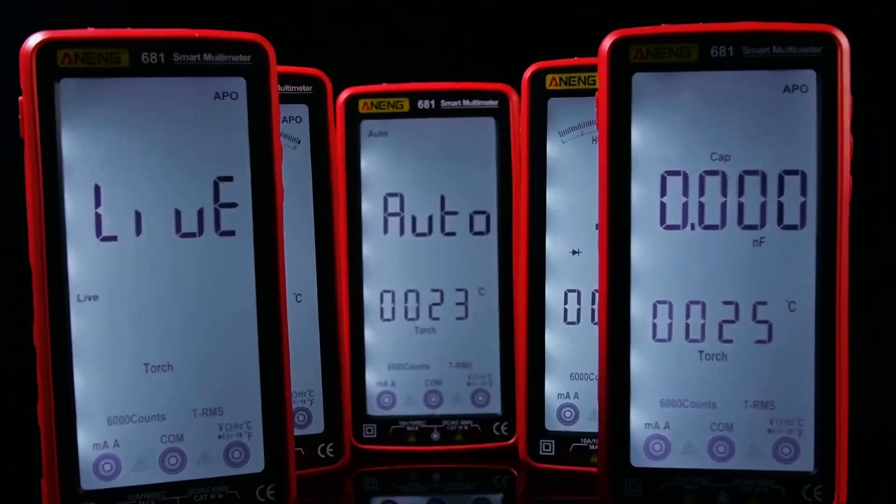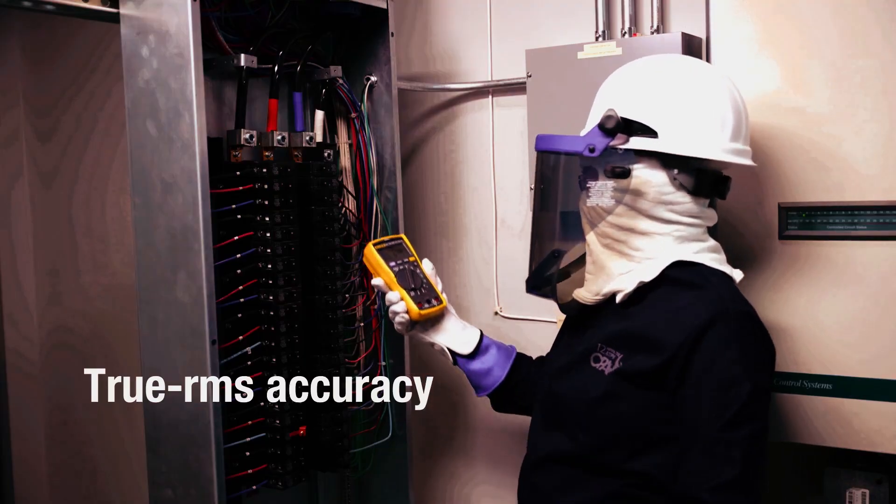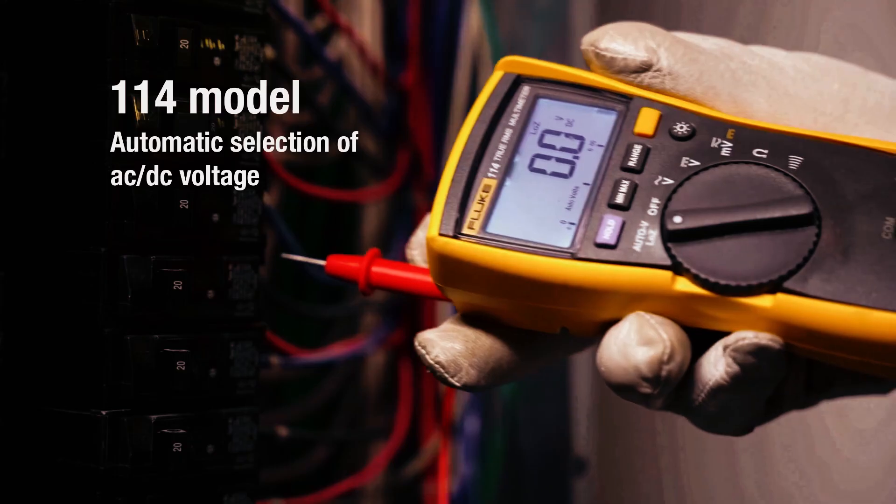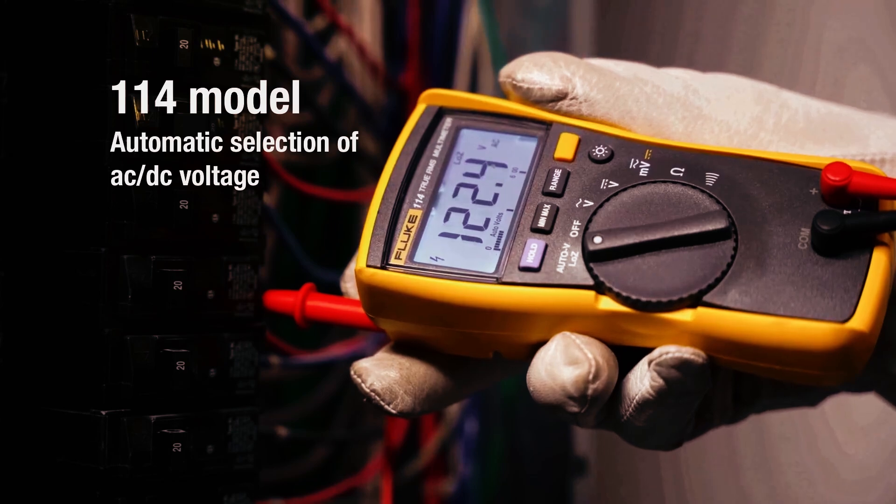If you can, always turn off the power before you connect the multimeter. But if you're testing live circuits, remember to only use one hand when holding the multimeter probes. This minimizes the risk of a fatal shock by preventing the current from flowing across your chest.